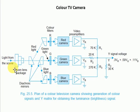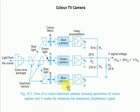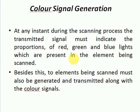The diagram shows: light from the scene entering the zoom lens package, which splits into red light, green light, and blue light. These pass through RGB color filters to the red camera, green camera, and blue camera respectively. The outputs are fed to video preamplifiers, labeled VR, VG, and VB. This is the complete optical color signal generation system.